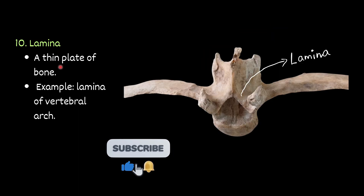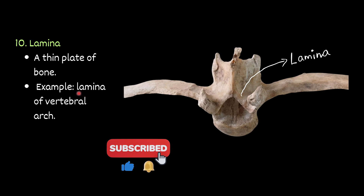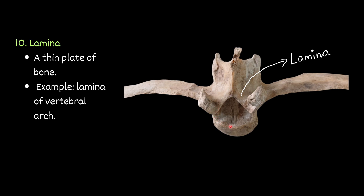Lamina — a thin plate of bone. For example, lamina of the vertebral arch. You can see this whole structure is the vertebral arch. Inside is the neural canal. On the roof you will find the lamina — the thin plate of bone. This is the lamina.